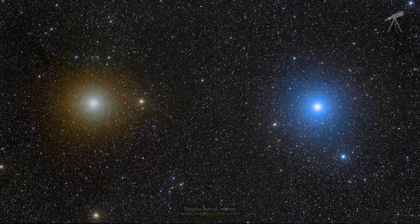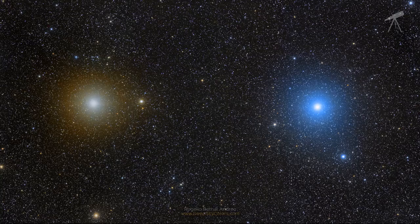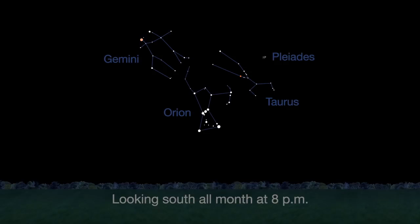There are some colorful star pairs, some visible just by looking up, and some requiring a telescope. Gemini's twins, the brothers Pollux and Castor, are easy to see without aid.